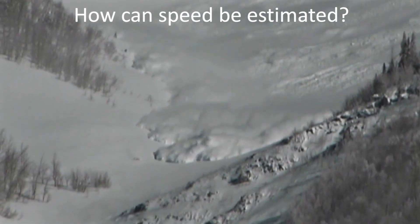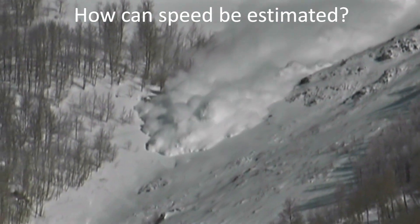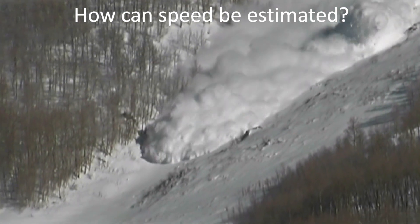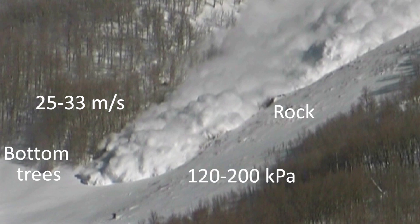Using a video of an avalanche, the front speed can be estimated from the time it takes for the front to travel between features such as rocks or trees. In this video clip, this rock and the bottom trees are about 80 to 100 meters apart. The front travels between these features in about three seconds, so the front speed at this stage is about 25 to 33 meters per second. If the density of the dense flow was 200 kilograms per cubic meter, the average impact pressure would be about 120 to 200 kilopascals, which is many times the impact pressure required to destroy a wood frame house.